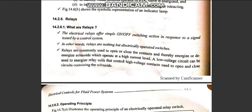If a control system gives power to the relay, the relay starts to energize and it starts to open or close — to turn on or off the circuit. This is the purpose of the relay.